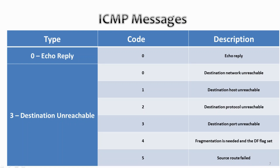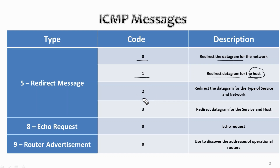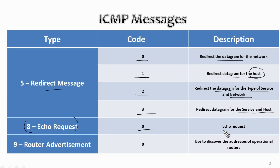For the redirect message (type 5): code 0 means redirect the datagram for the network, code 1 means redirect the datagram for the host, code 2 means redirect the datagram for the type of service and network, and code 3 means redirect the datagram for the type of service and host. Type 8 is the echo request, with code 0.